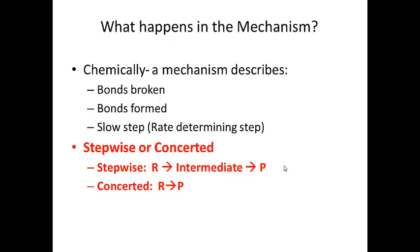A mechanism can be stepwise or it can be concerted. Stepwise means the reaction happens in multiple steps - you go from reactant to some intermediate and then to product. That's a two-step reaction. Concerted is the opposite - concerted happens all in one step. You go directly from reactants to products with no intermediates. That's very important.